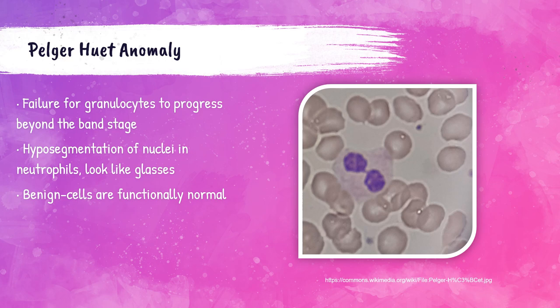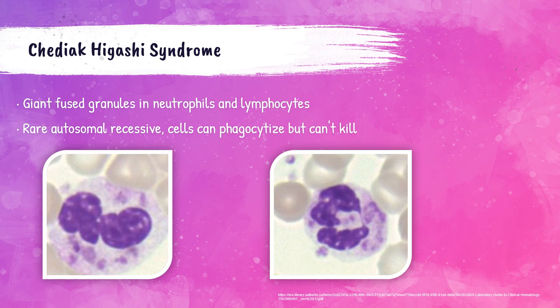Chédiak-Higashi syndrome is a rare autosomal recessive disorder. This disease damages the immune system, leaving the white blood cells with the ability to phagocytize foreign invaders but not kill them — they eat them but don't destroy them. You'll see giant fused granules in neutrophils and lymphocytes in patients with this disorder. Patients with Chédiak-Higashi syndrome have frequent infections throughout their life.